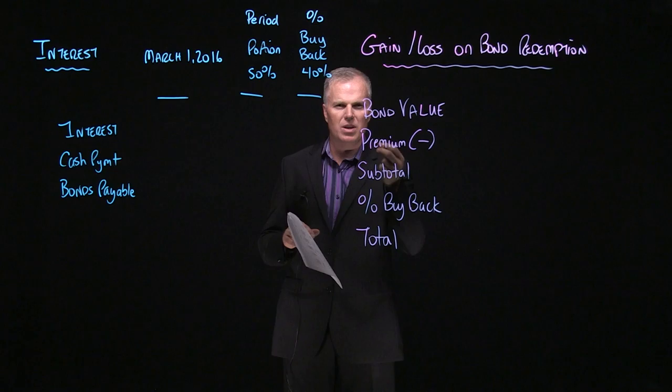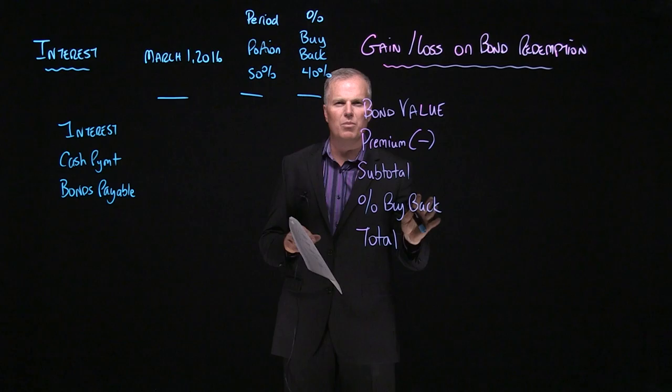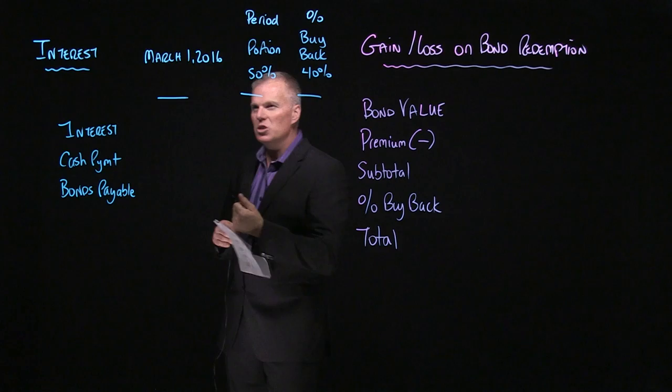So let's take that information from the second period in your effective interest schedule and put that information into our two templates, create our two journal entries, and get 100%. Let's get started.